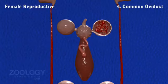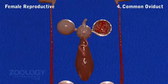Common Oviduct: The right oviduct passes beneath the ventral nerve cord and unites with the left one in the 11th segment to form a single median common oviduct, which is folded and leads behind into the vagina.